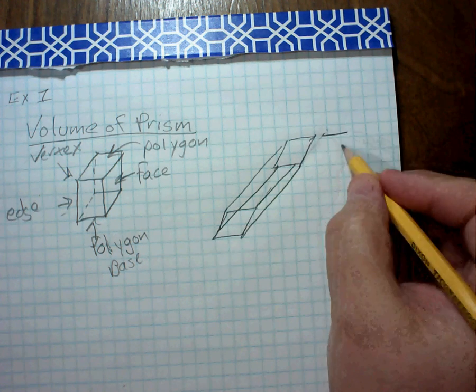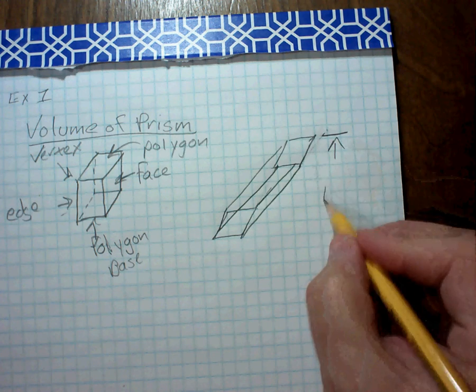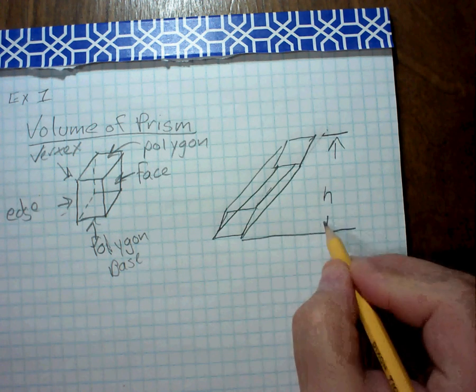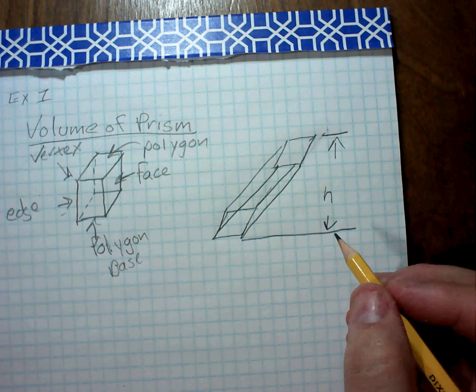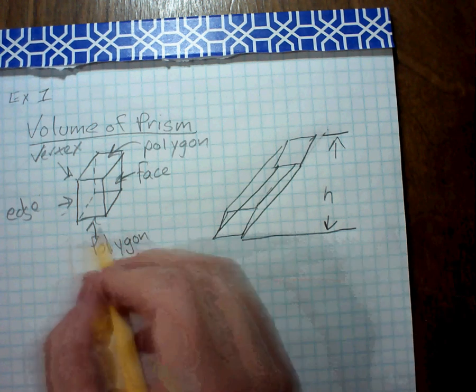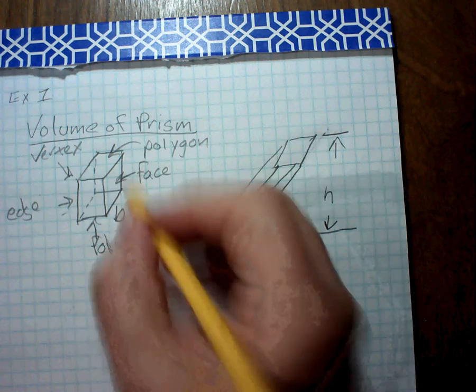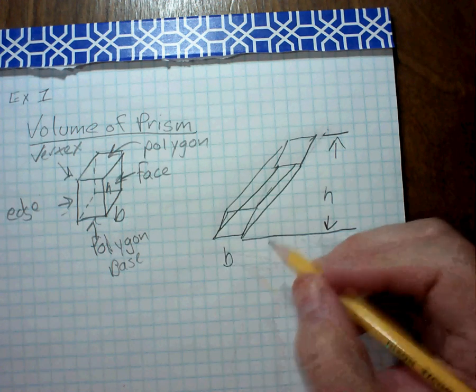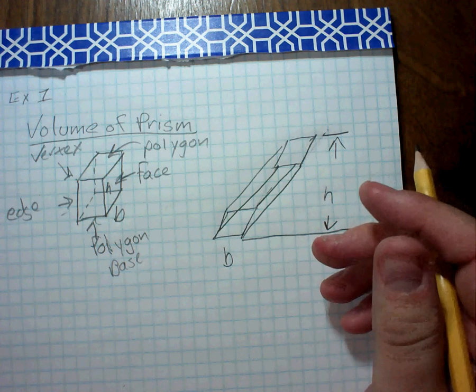But for this one, we're going to identify the height as the actual height. How high does it sit off of the ground? And then this would be called the base, B. And this would be called H, the height. This is the base, B. And this would be called the height.